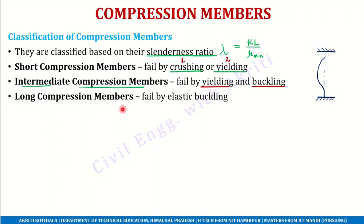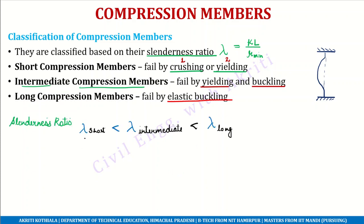Long compression members have a very high slenderness ratio. To summarize: the slenderness ratio of the short compression member is the least, and the slenderness ratio of the long compression member is the maximum. This is the sequence of slenderness ratio.